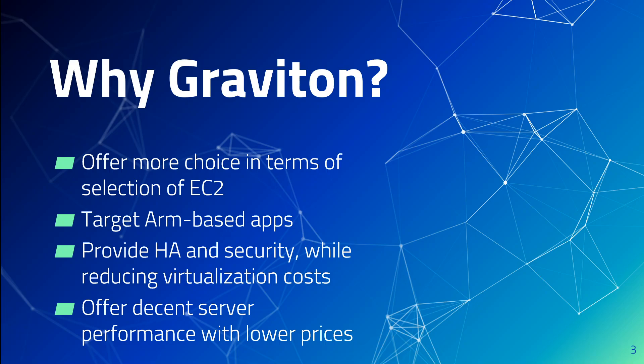The AWS Graviton processors are supported by many Linux operating systems including Amazon Linux 2, Red Hat Enterprise Linux, SUSE, and Ubuntu. AWS Graviton 3 processors feature always-on memory encryption, dedicated caches for every vCPU, and support for pointer authentication. EC2 instances powered by AWS Graviton processors are built on the AWS Nitro system, which features the AWS Nitro security chip with dedicated hardware and software for security functions. It also offers support for encrypted Amazon EBS volumes by default.